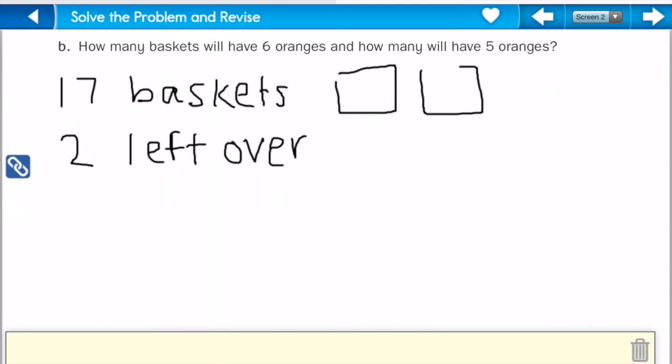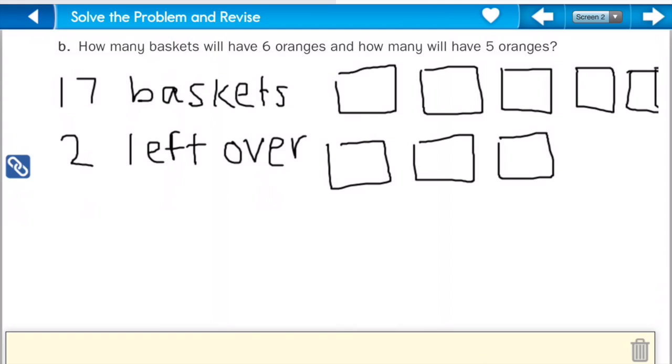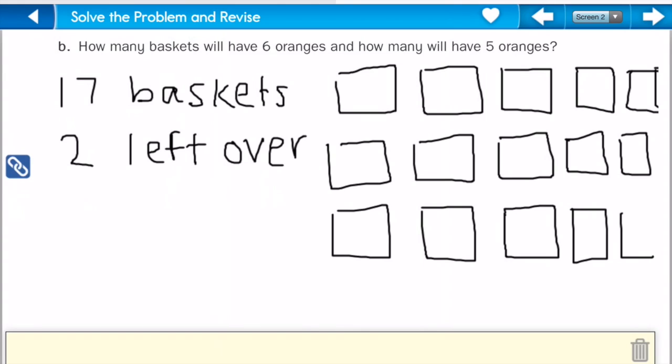1, 2, 3, 4, 5, 6, 7, 8, 9, 10, 11, 12, 13, 14, 15, 16, 17. So, I know that I have 17 baskets all together, okay? They want to know how many baskets will have 6 oranges, and how many will have 5 oranges. So, I know that I have 17 baskets with 2 left over. So, I know that in each one of these, I'm going to count by 5s.